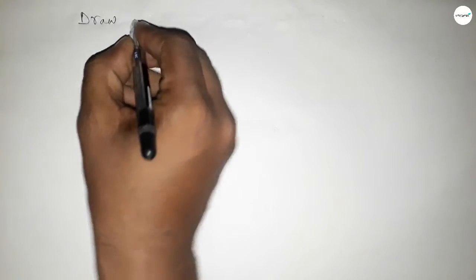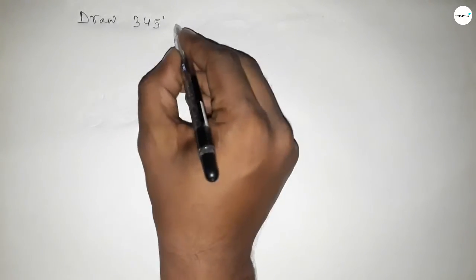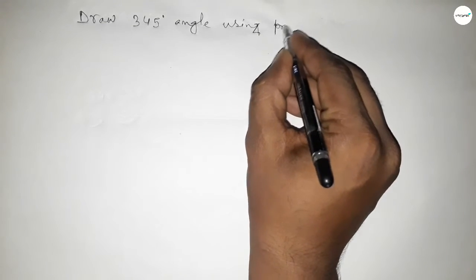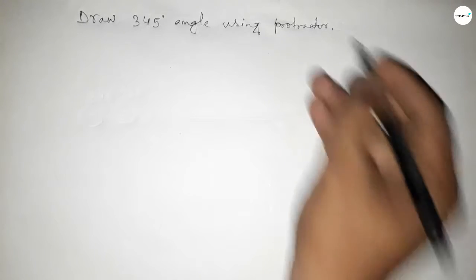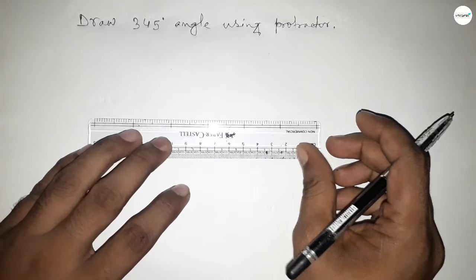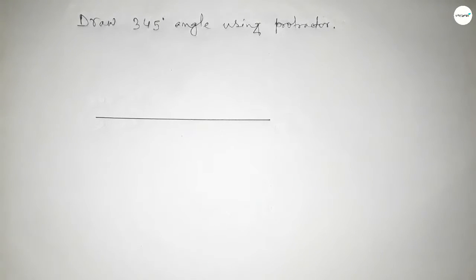Hi everyone, welcome to SSR Classes. Today in this video we have to draw 345 degree angle by using protractor. So let's start the video. First of all, we have to draw here a straight line of any length.